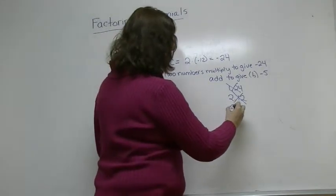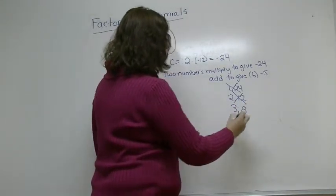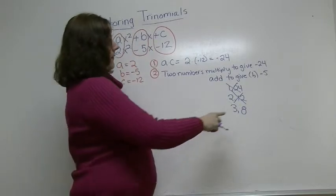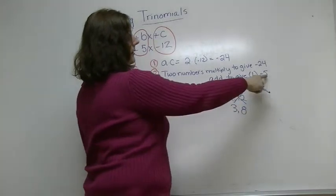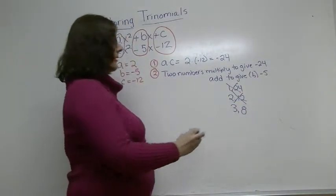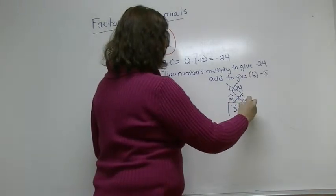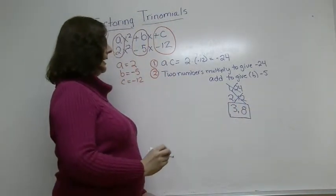My next factor is 3 and 8. If I add 3 and 8, I get 11. But if I subtract 3 and 8, I get 5. So that's how I know that that is the factor that I'm going to choose, is 3 and 8.